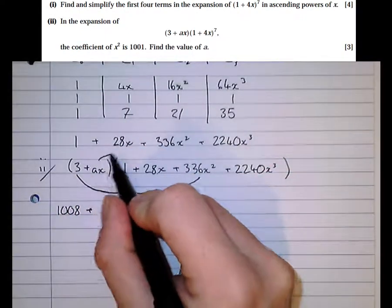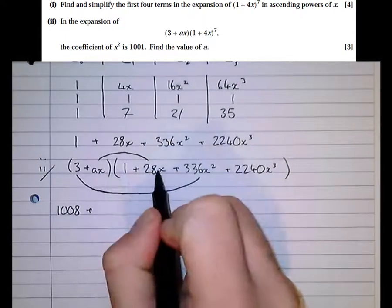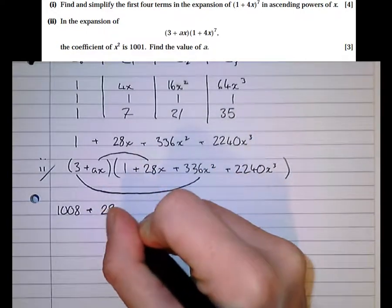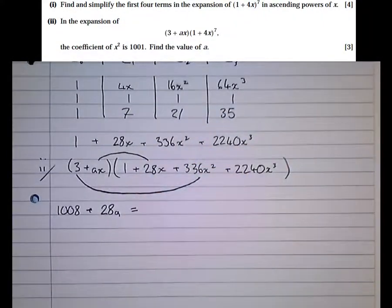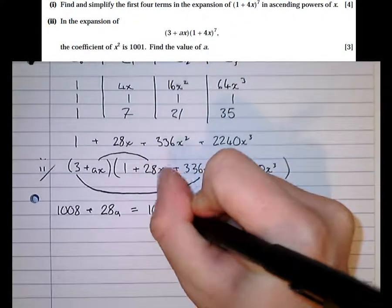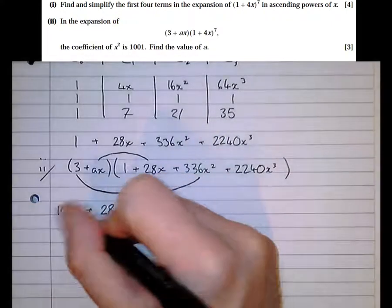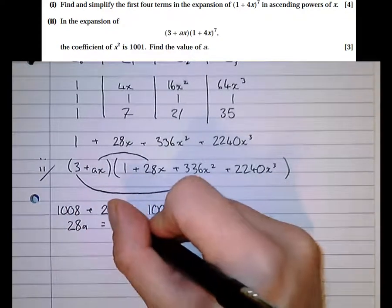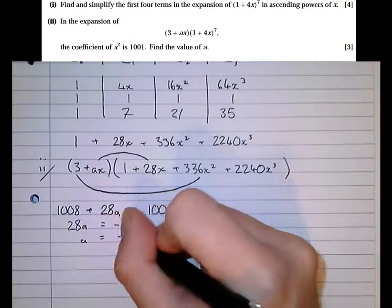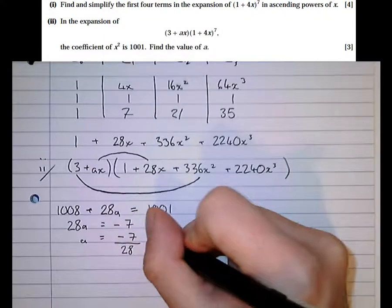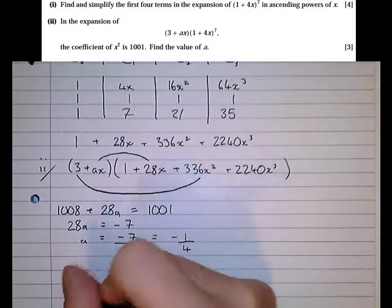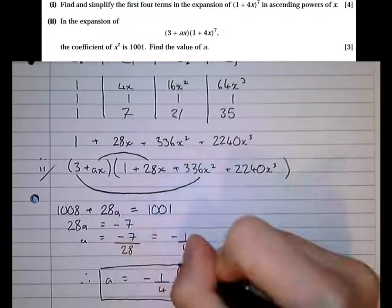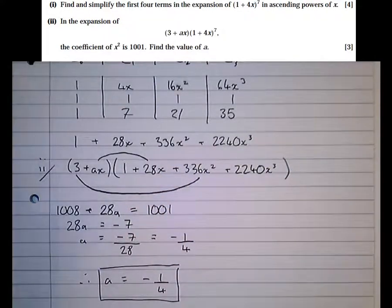Then there's another way we can make an x squared. 28x times ax gives us 28ax squared. So the coefficient of that is 28a. And we're told that equals 1001 in the question. So now we can rearrange this. Taking the 1008 to the other side, we get 28a equals minus 7. So a equals minus 7 over 28, which is equal to minus 1 quarter. Therefore, a equals minus 1 quarter. And we're done. And that's a very, very common type of exam question.